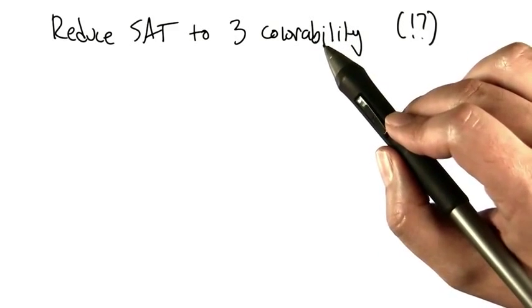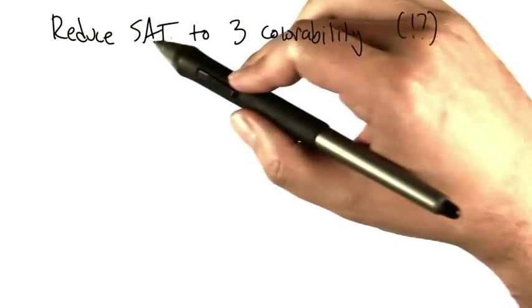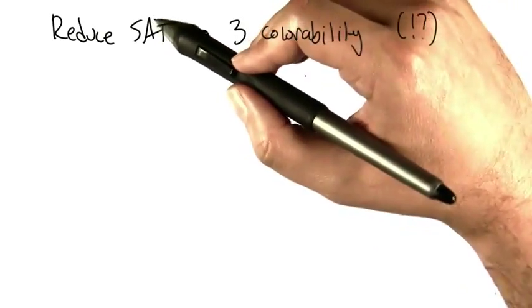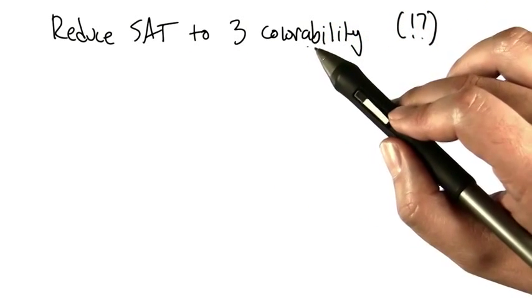But to show that it's NP-hard, that means we have to take some NP-hard problem and solve it by way of 3-colorability. So that means we have to be able to take a satisfiability formula, somehow express it as a graph coloring problem.